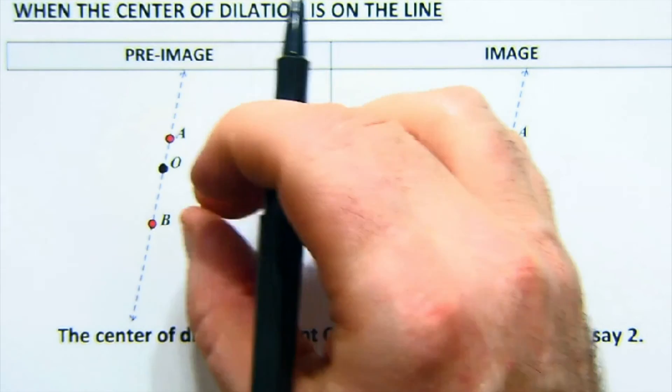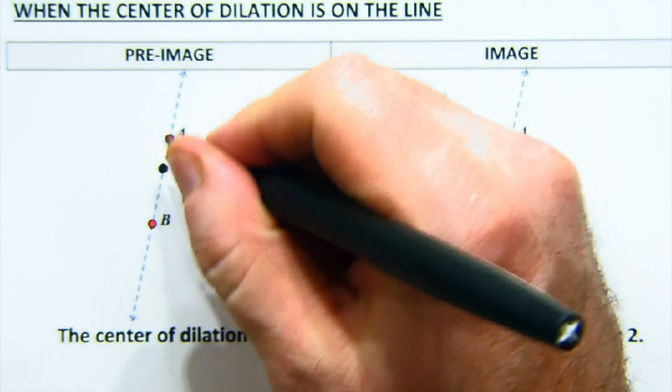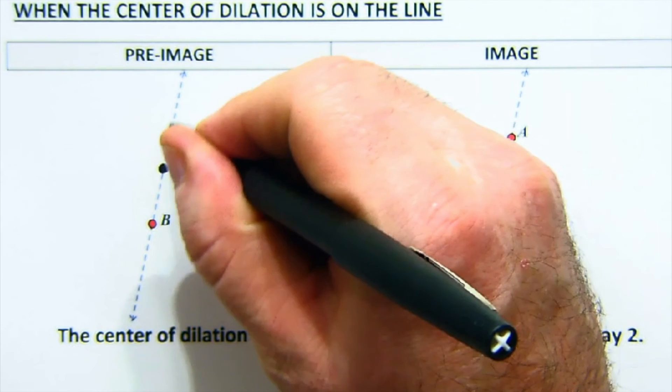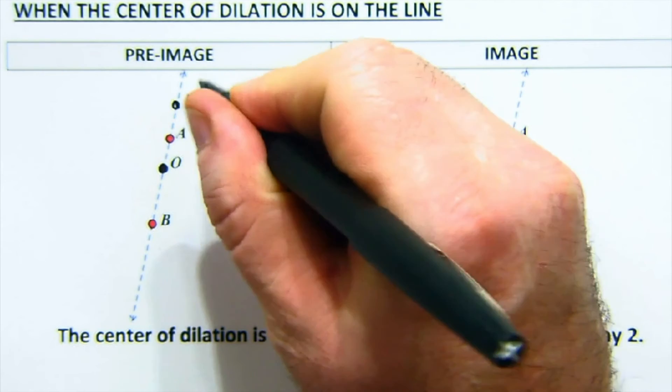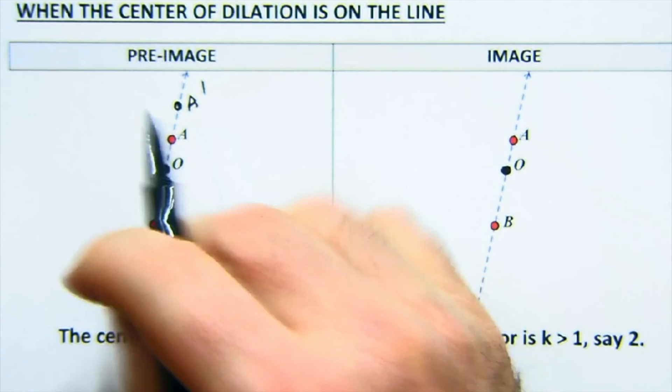So basically if your center of dilation, in this case, is always on the line, or in here, whether you dilate by a value like two or three or by a half, say if you dilate it by two, A would be two times further away and B would be two times further away.